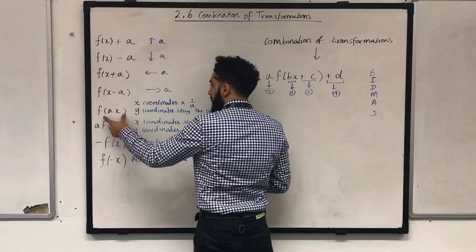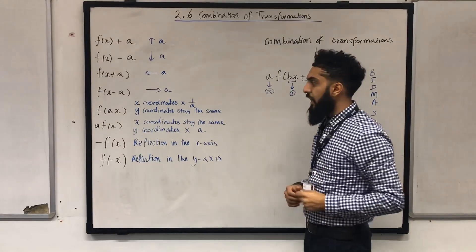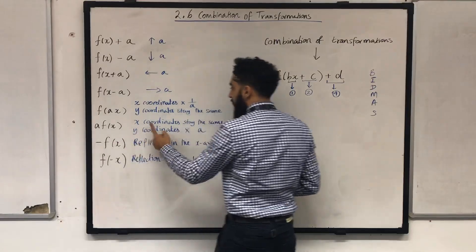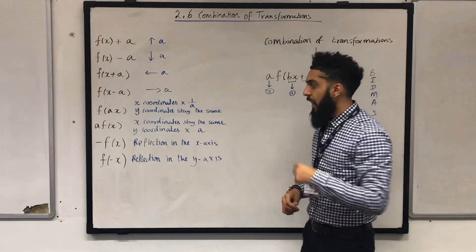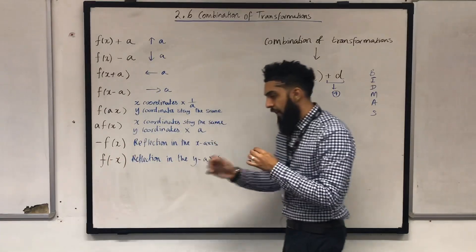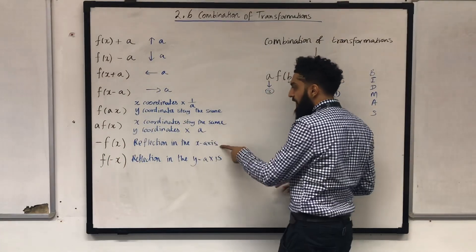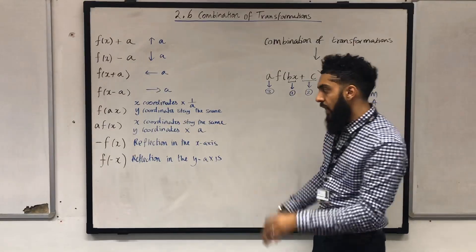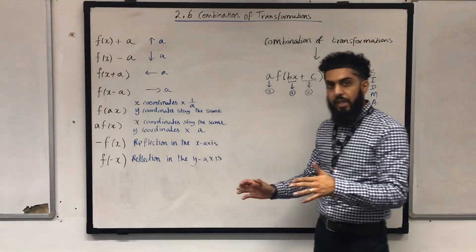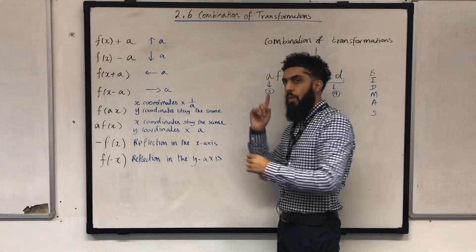Over here, you multiply the x coordinates by 1 over a, keeping the y coordinates the same. In this case, you keep the x coordinates the same and multiply the y coordinates by a. This one over here, minus f of x: you have to reflect the graph f of x in the x-axis. And the last one is f of minus x: you take the graph f of x and reflect it in the y-axis.